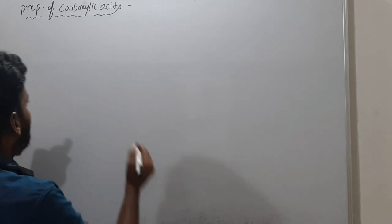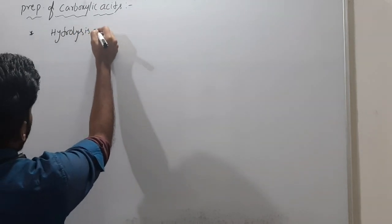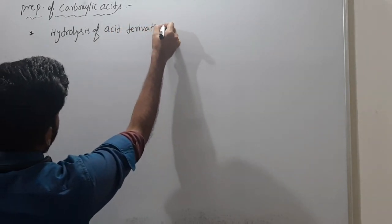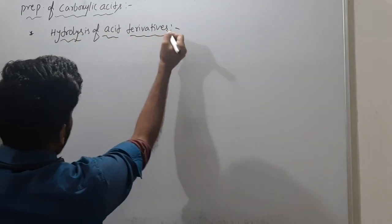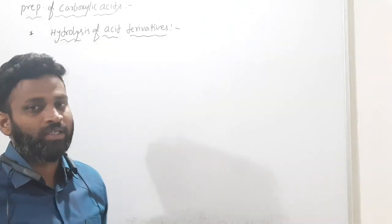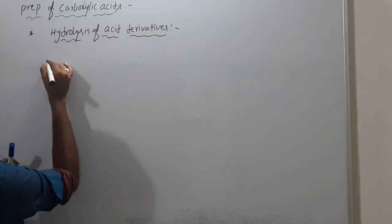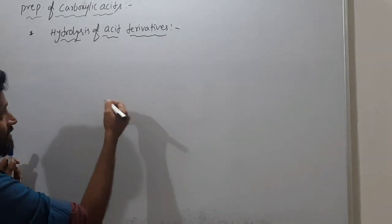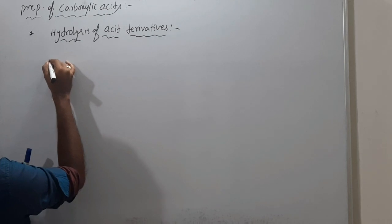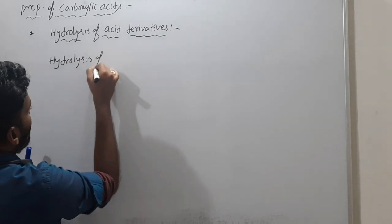We discussed already a few preparations. Here I was given hydrolysis of acid derivatives. Acid derivatives on hydrolysis give carboxylic acids. So here ester hydrolysis, nitriles hydrolysis, acid halides hydrolysis, anhydrides hydrolysis are given. Now, hydrolysis of nitriles.